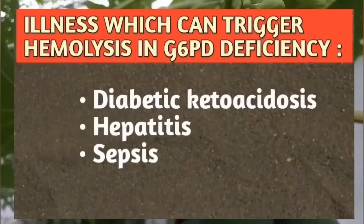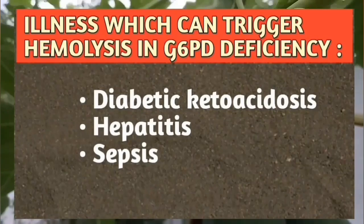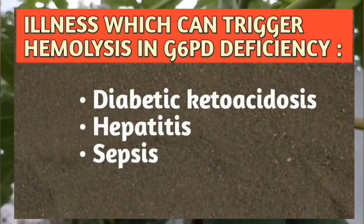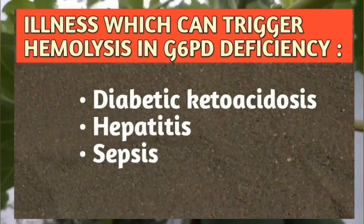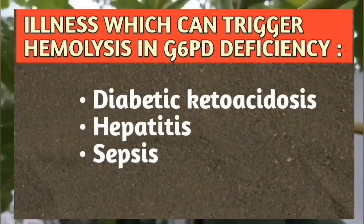Diabetic ketoacidosis, hepatitis, and sepsis can also trigger hemolysis in G6PD deficiency.